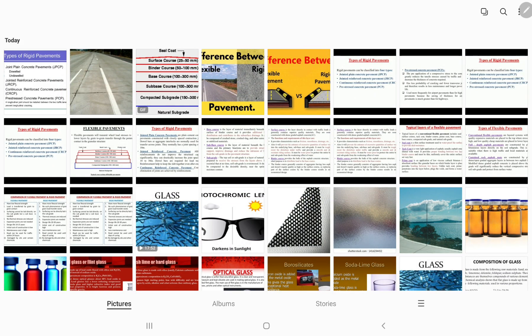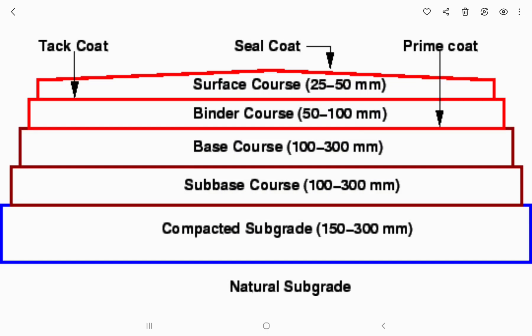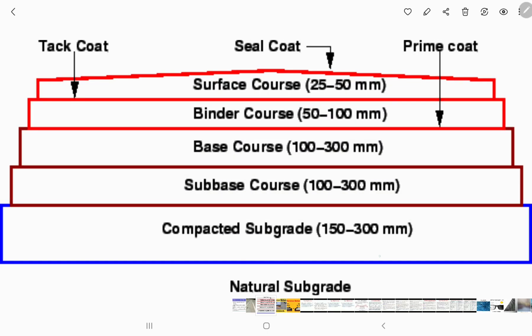First, compacted subgrade. Then sub-base course. Then base course, binder course, and surface course. We are going to do flexible pavement.